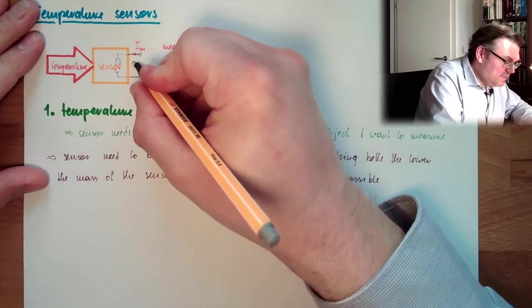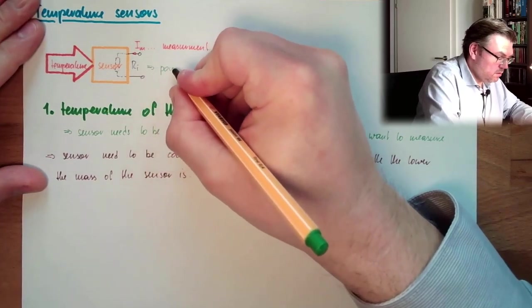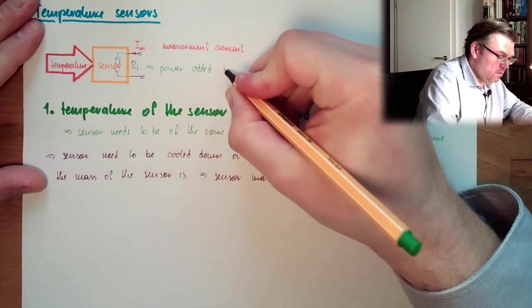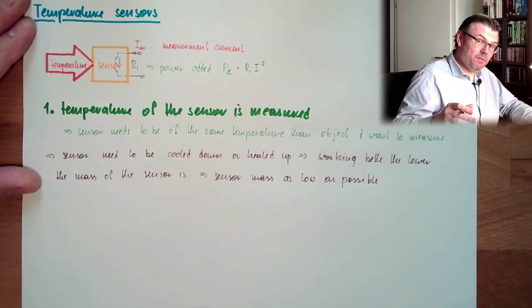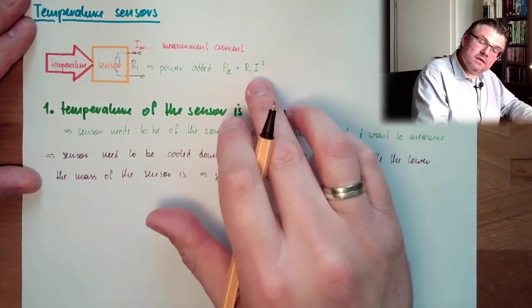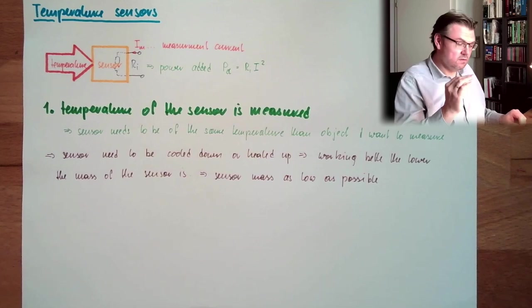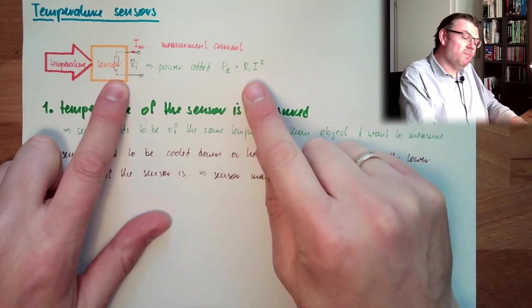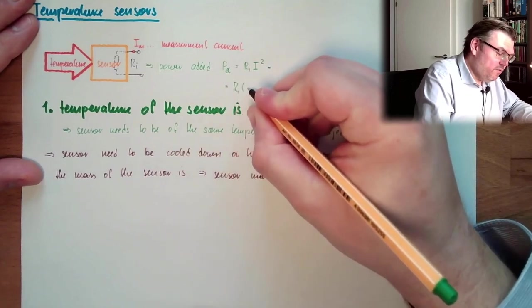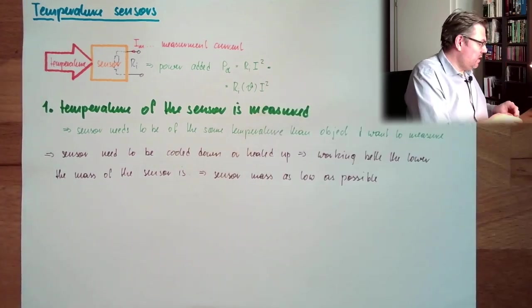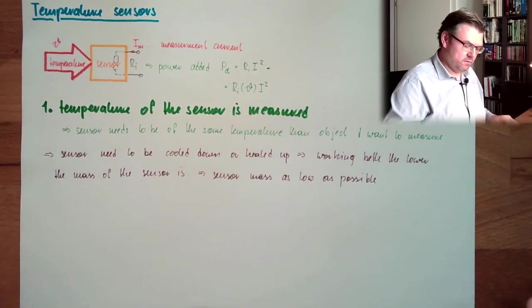So what we have here, here we have some internal resistance of the sensor. So we are adding power, which is Ri multiplied by i squared, U multiplied by i, U is R multiplied by i squared, multiplied by i squared. This is heating up the sensor. This power is heating up the sensor. And this internal resistance might be also temperature related. So this might be temperature related, Ri from Theta, I will write here Theta.